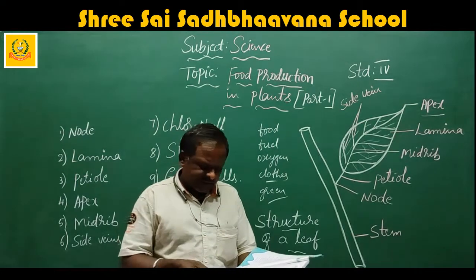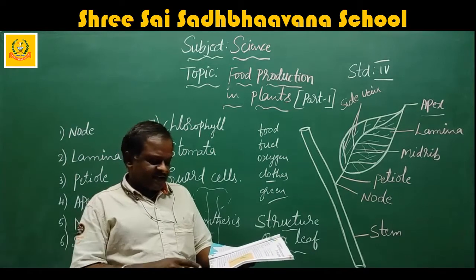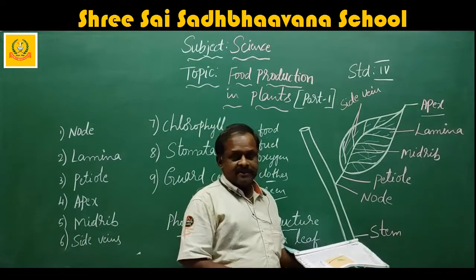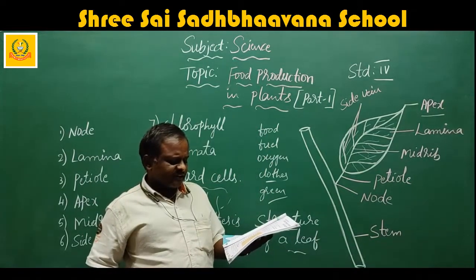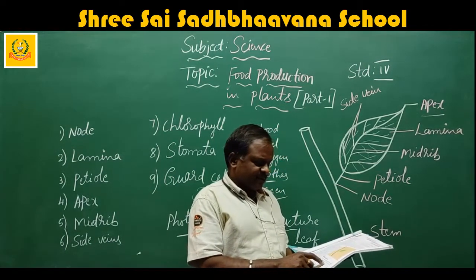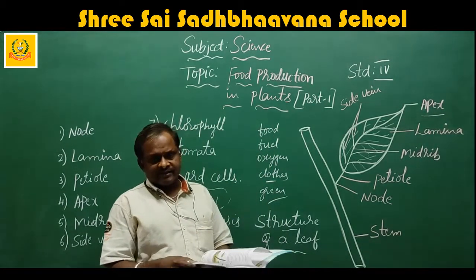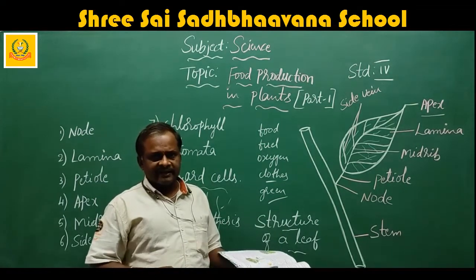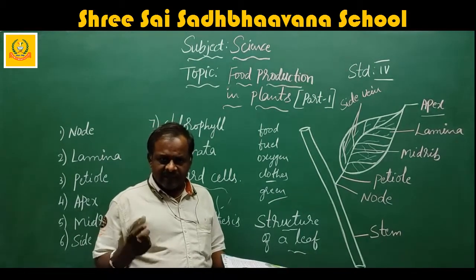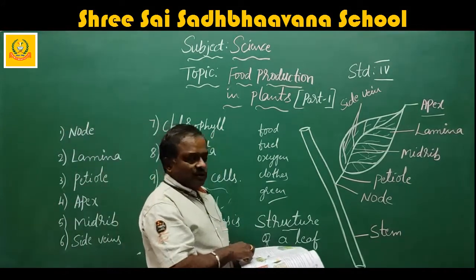Leaves of a plant are also known as the food factory, as they produce food using carbon dioxide, water and sunlight. They are the food factories — or what we call the kitchen of the plant — where food is prepared using water, sunlight, and the green pigment called chlorophyll.